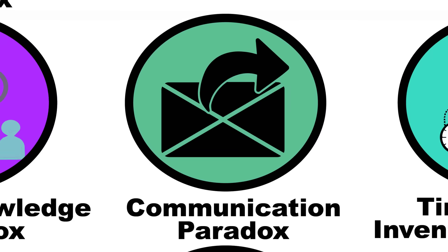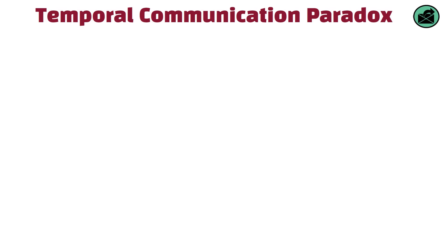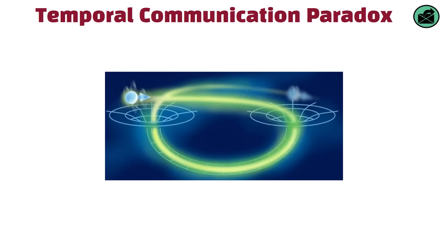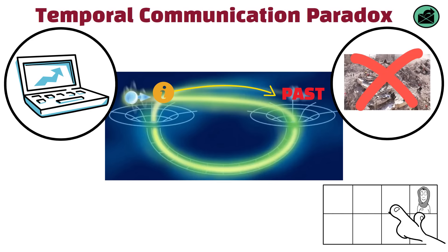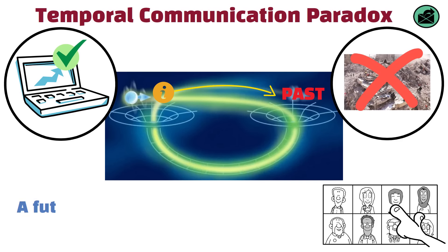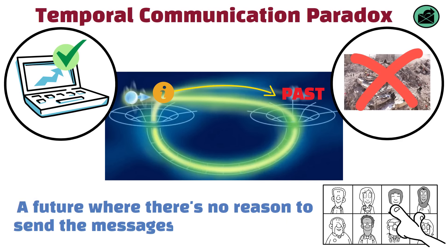The temporal communication paradox involves sending messages through time. If it's possible to send information to the past, one could theoretically send messages to prevent disasters or make different choices. However, if these messages are consistently acted upon, it could lead to a future where there's no reason to send the messages in the first place, creating a paradox.